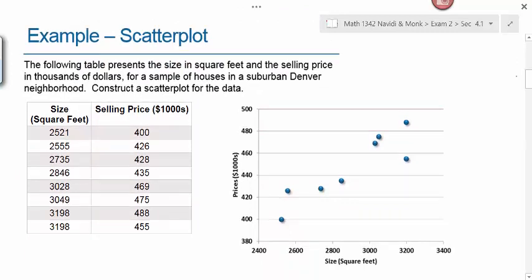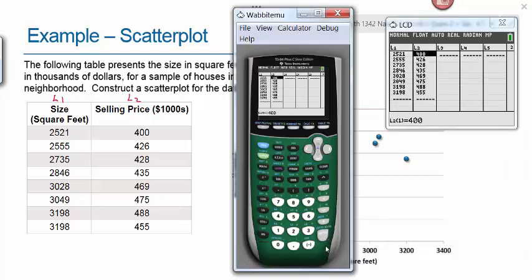For this example, the data represents the size of a house in square feet, which we'll put in list one, and the selling price in thousands of dollars in list two. This is for a sample of houses in a suburban Denver neighborhood. The first thing you need to do is get your calculator and put the lists into it. To get to your data, hit stat enter.